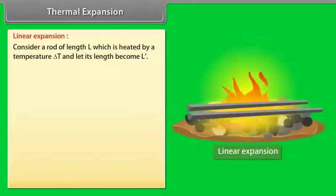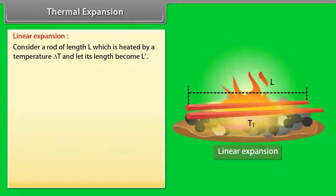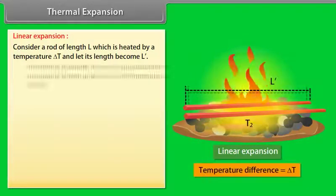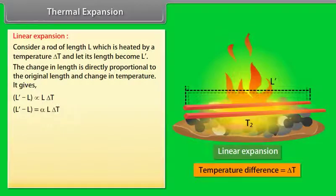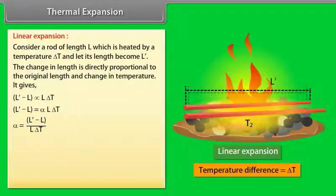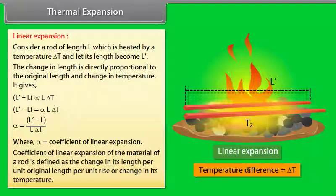Linear expansion: Consider a rod of length L which is heated by a temperature ΔT, and let its length become L'. The change in length is directly proportional to the original length and the change in temperature, giving L' − L = αLΔT. The value of α = (L' − L)/(LΔT), where α is the coefficient of linear expansion. It is defined as the change in length per unit original length per unit rise in temperature.